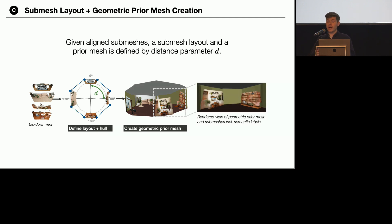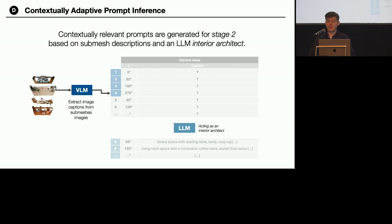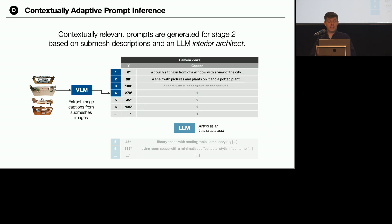To generate text prompts for the iterative blending process, we utilize a large language model instructed to act as an interior architect. Given a set of descriptions of each of the submeshes, this model is asked to produce creative descriptions of the connecting spaces.